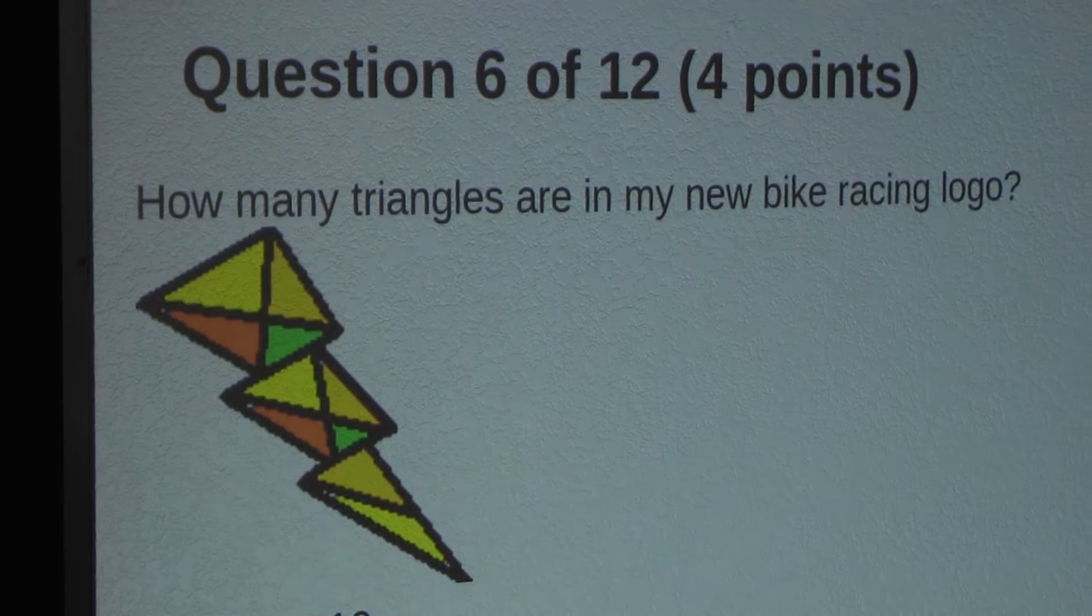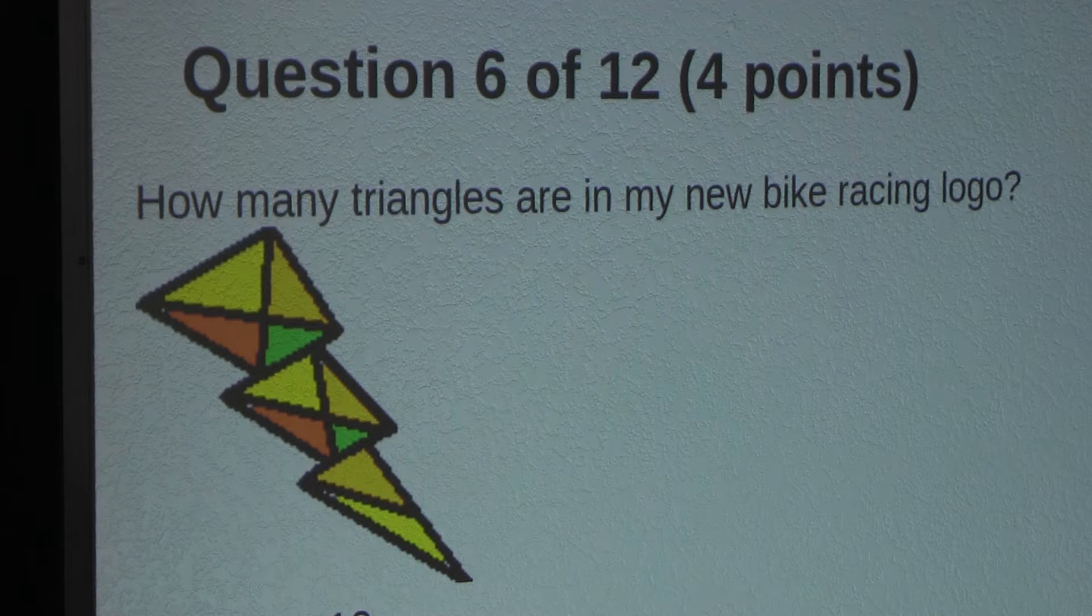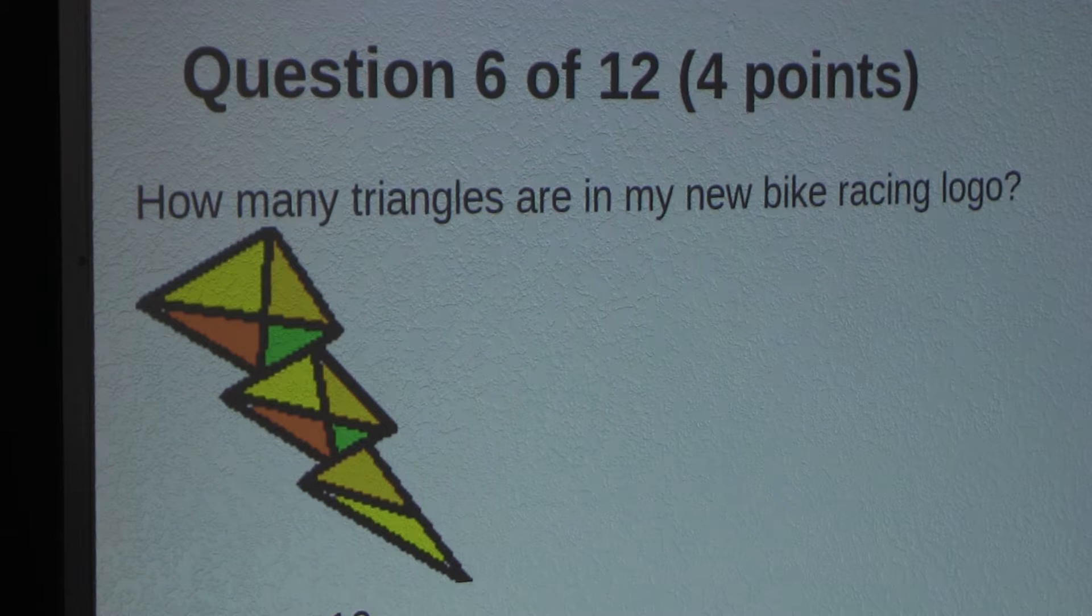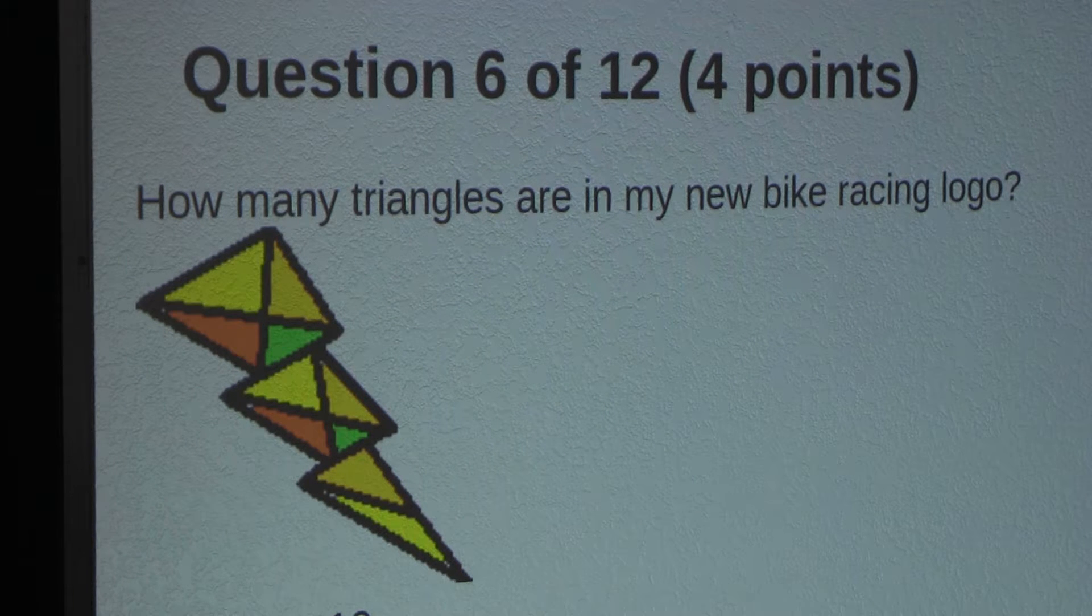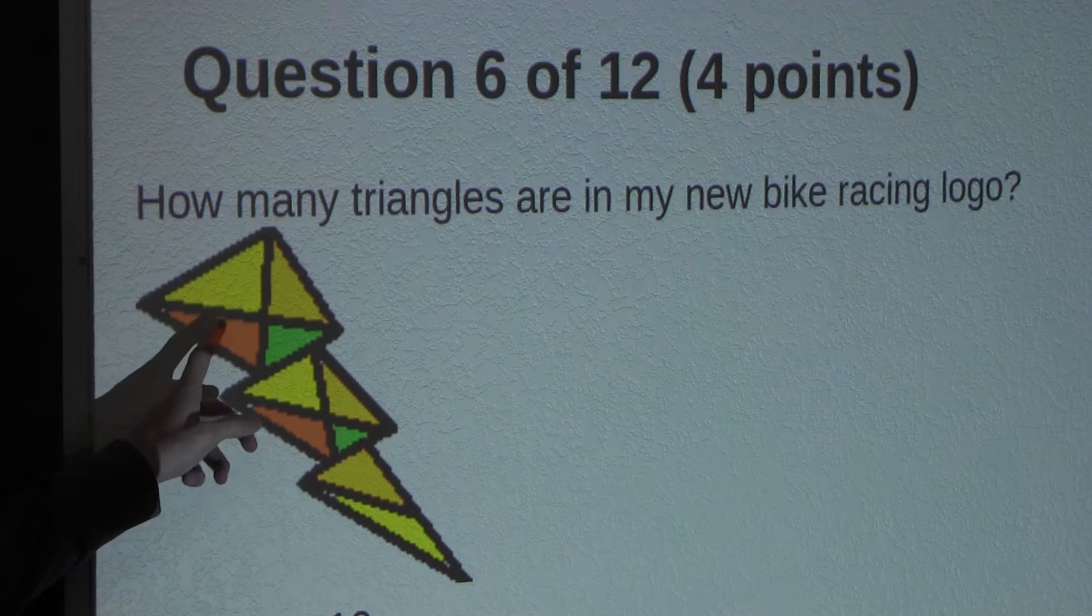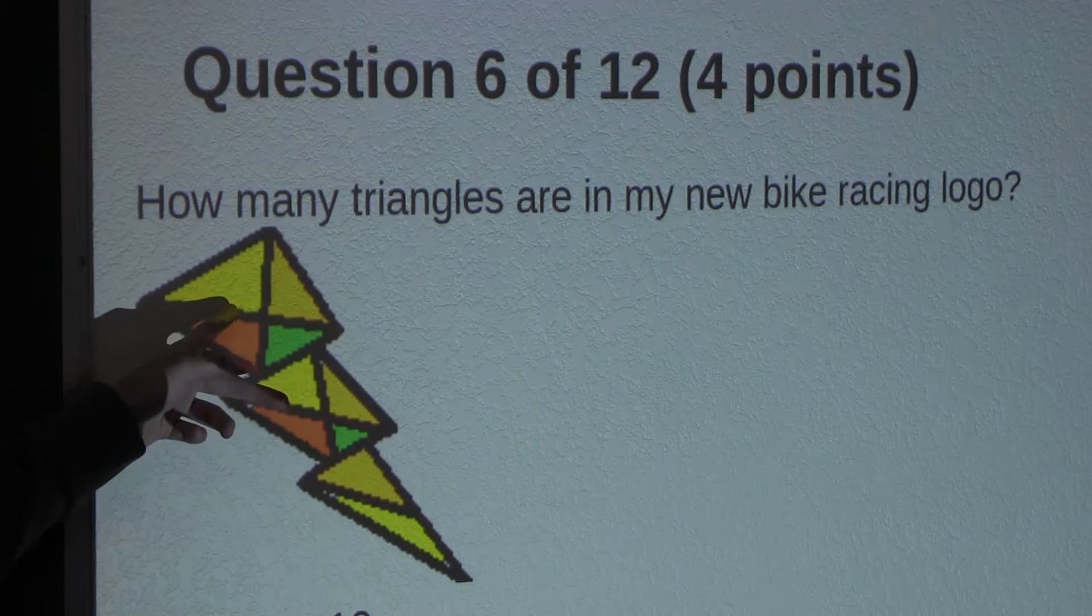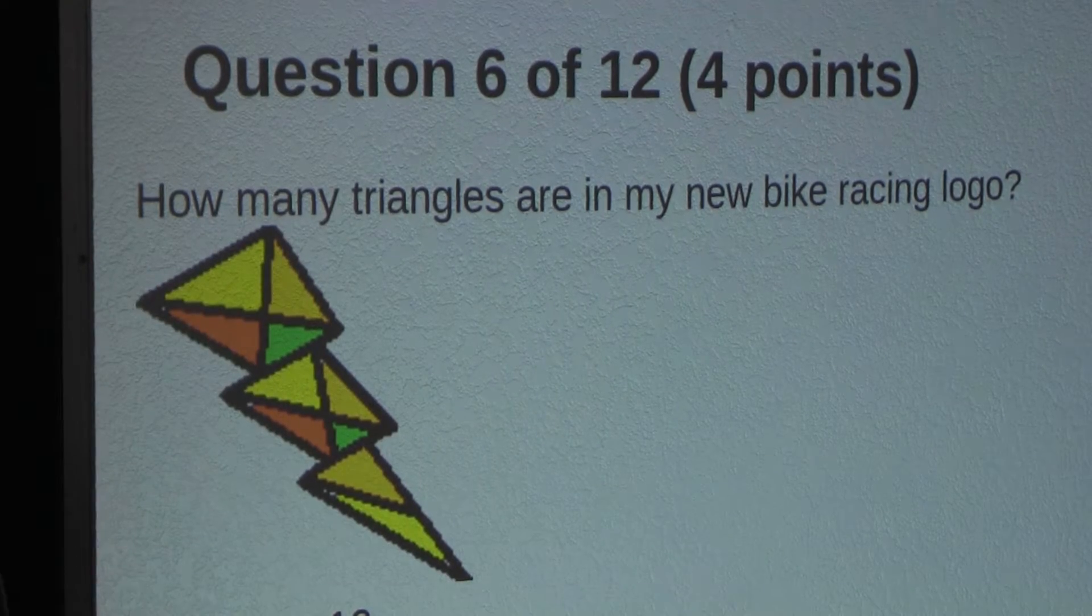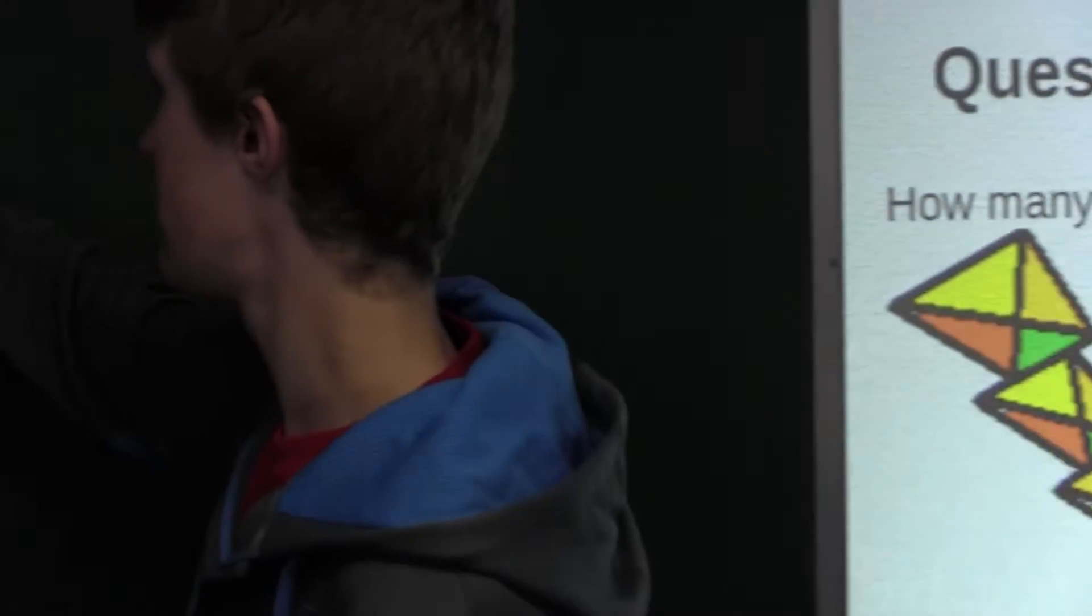Now to start off, let's count all the triangles that can be made from using only one color triangle. Well, in this first quadrilateral, there are 1, 2, 3, 4 small triangles that can be made up with just one color. So we have 4.